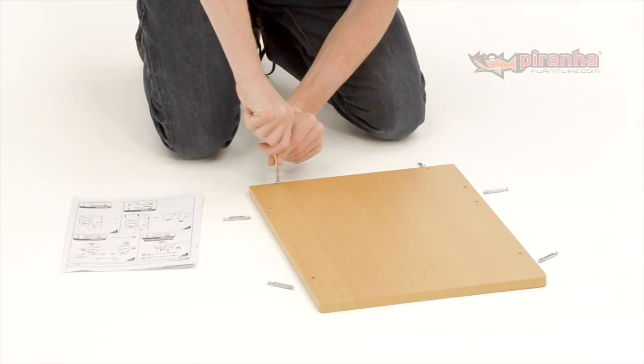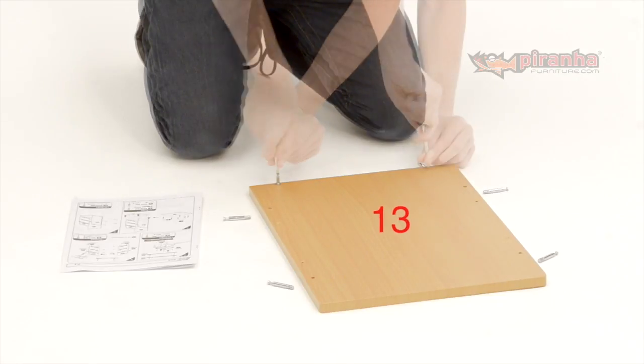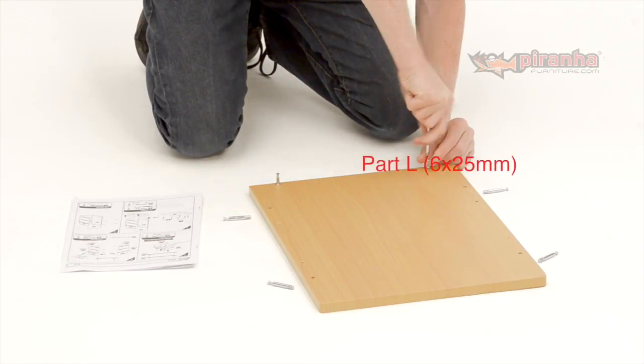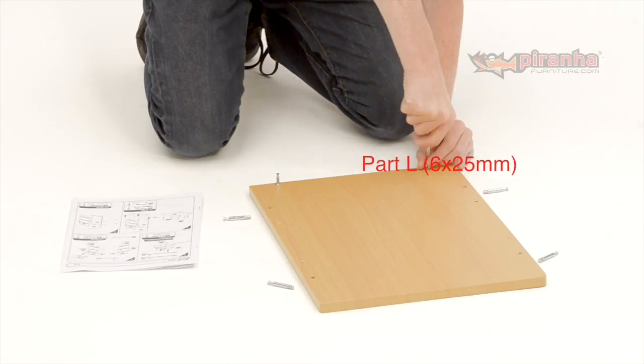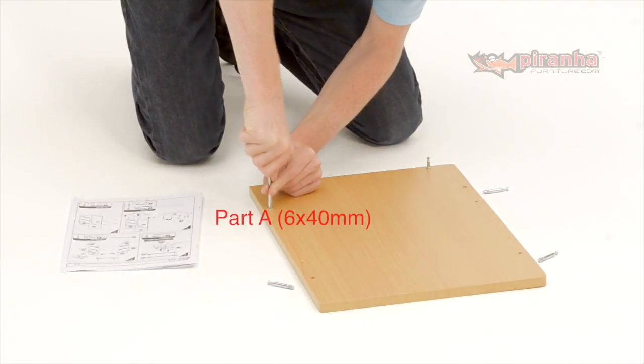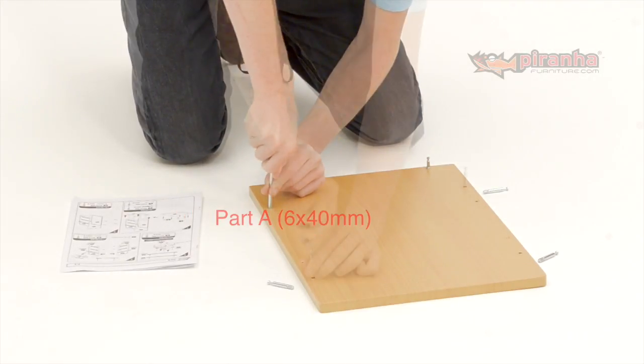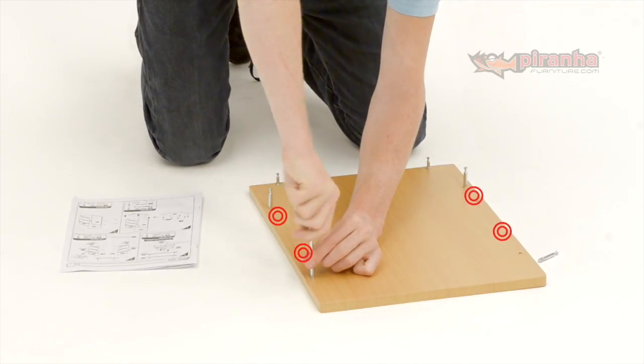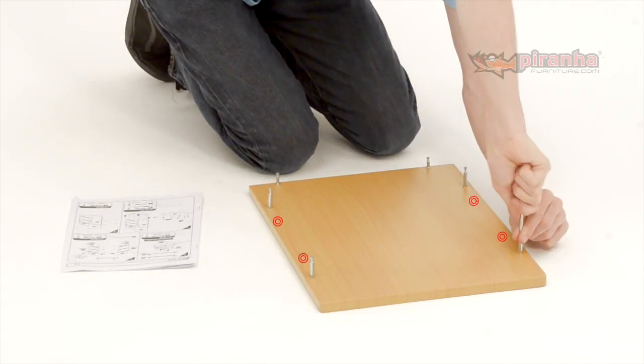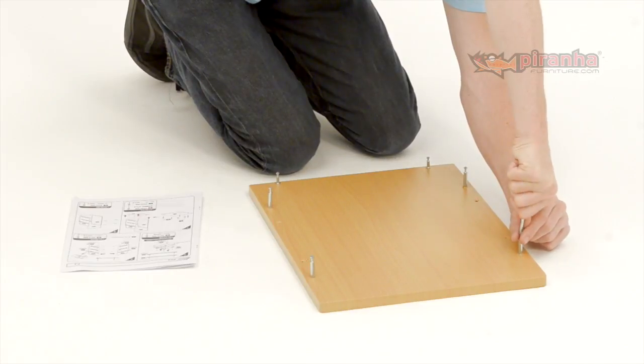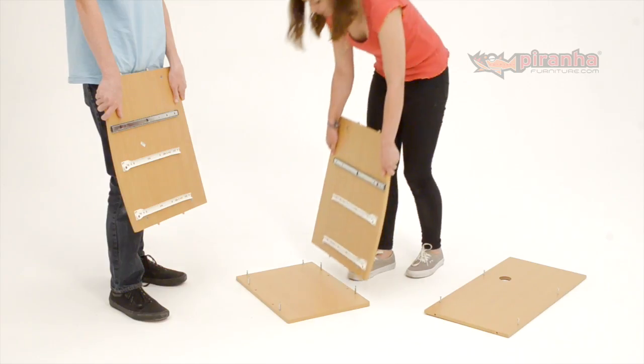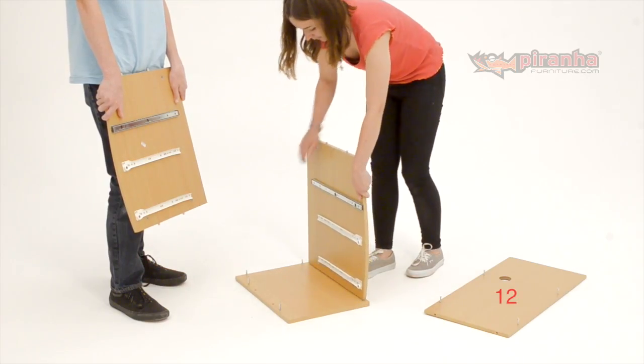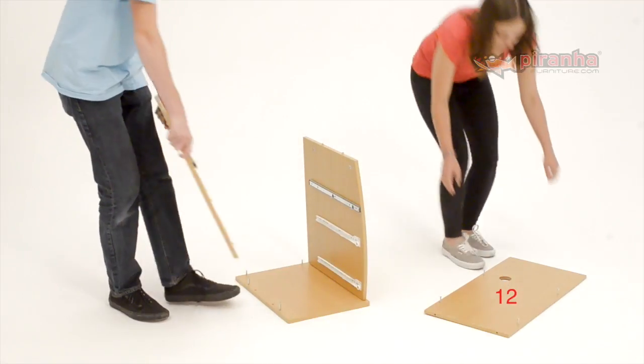Step 7. Here we fit the cam bolts to the base of the drawer unit. In this step we need to use both sizes of bolt. Check the assembly guide to see which bolts fit where. You will also notice four larger holes in this panel. These will receive the wooden dowels which are pre-fitted into the two side panels. Slide the panels onto the cam bolts, locking in place with the connecting pieces.